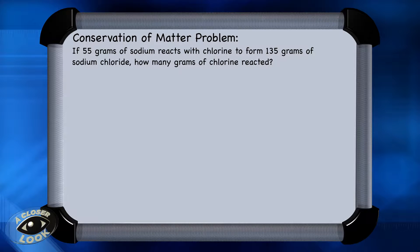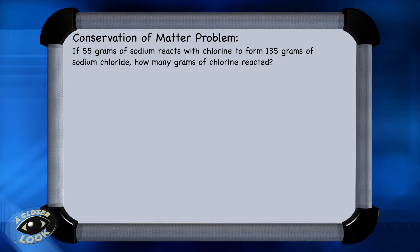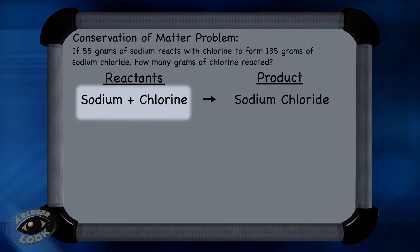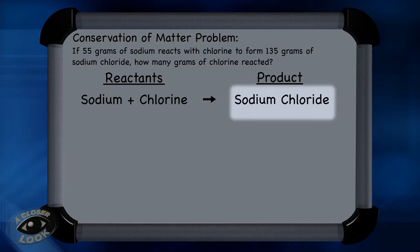Here is a conservation of matter problem. If 55 grams of sodium reacts with chlorine to form 135 grams of sodium chloride, how many grams of chlorine reacted? In this reaction, sodium and chlorine are the reactants, combining to form the product, which is sodium chloride.